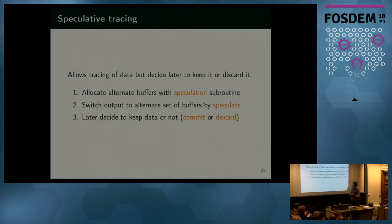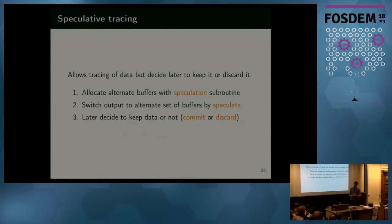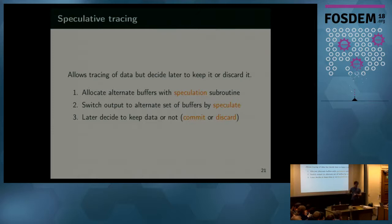Speculative tracing: sometimes you need to record function arguments and decide to keep the results only when it returns an error, which is quite hard for a tracer to solve. In D-trace, speculative tracing allows you to speculatively store something aside to different sets of buffers and later decide whether you commit or discard the value depending on — for example — the return value. If it's an error, we copy your temporary buffers to the main one and it appears to the tracer in user space.